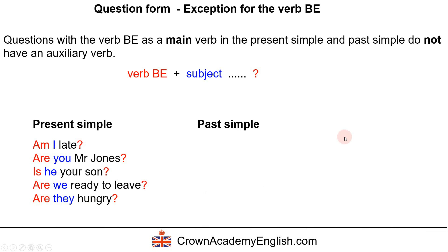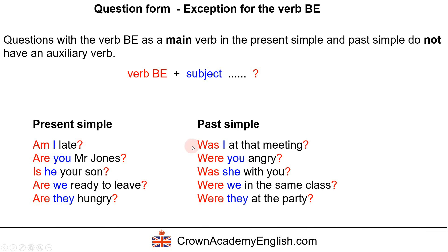In the past simple: 'Was I at that meeting?' 'Were you angry?' 'Was she with you?' 'Were we in the same class?' 'Were they at the party?' Here we have the verb 'be' in the past simple form: was, were, was, were, were. The subject follows it, and in all examples we write the question mark at the end.